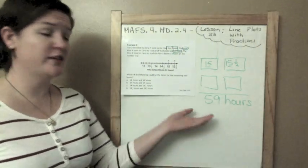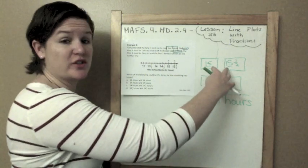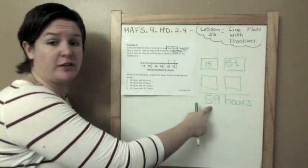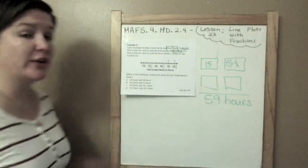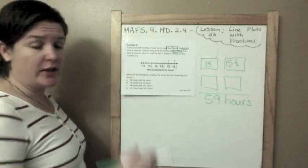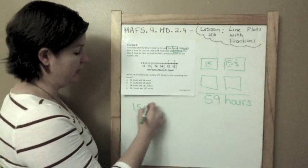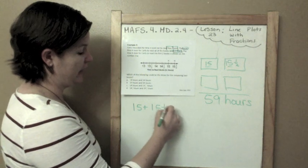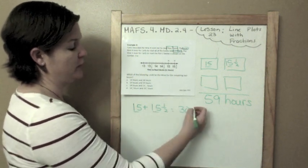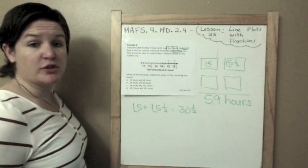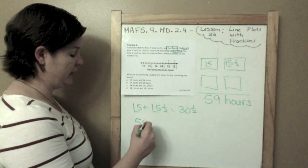If we know the total is 59 hours, we can go ahead and add up what she's currently read and subtract it from our 59 hours to see what is still remaining. That will help us narrow down the answer choices. All right, so we know that 15 plus 15 and a half, we know 15 plus 15 is 30, and we just add that half onto it. So now we need to subtract to see what we are missing. So 59 minus 30 and a half.